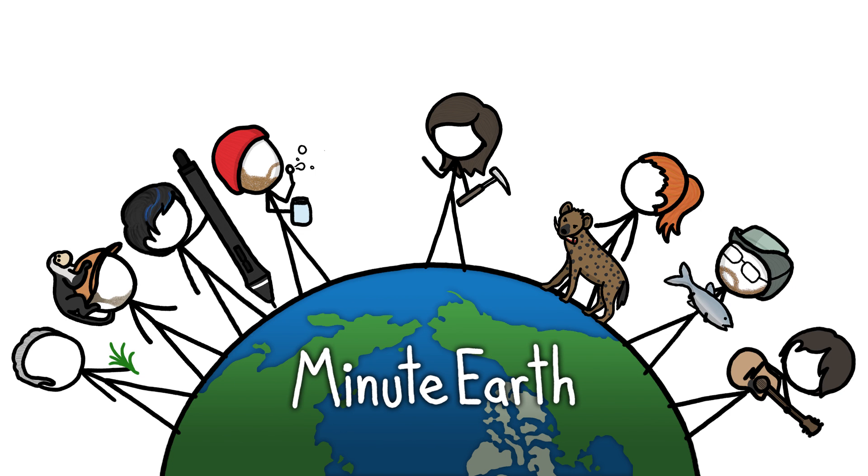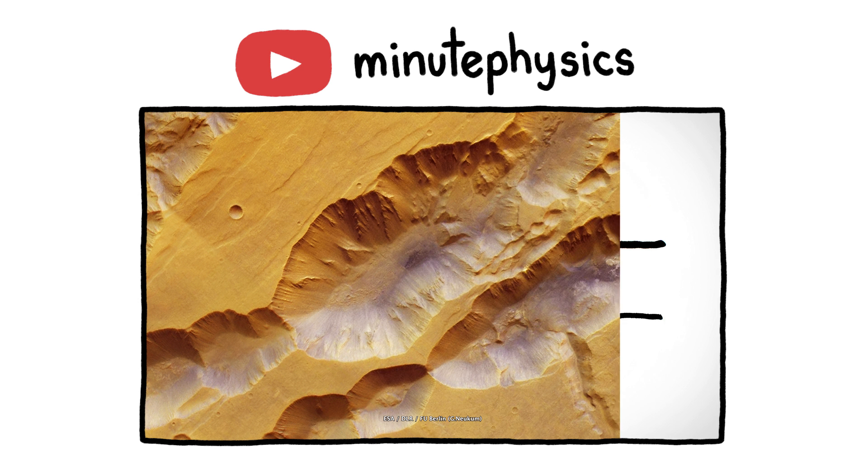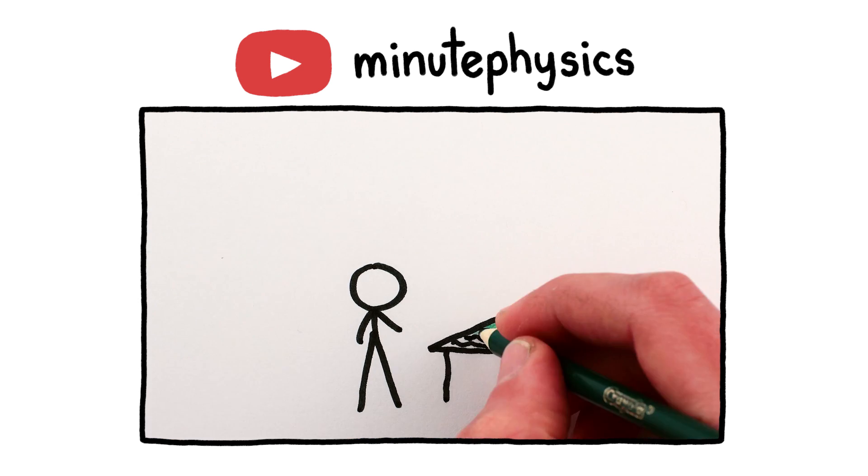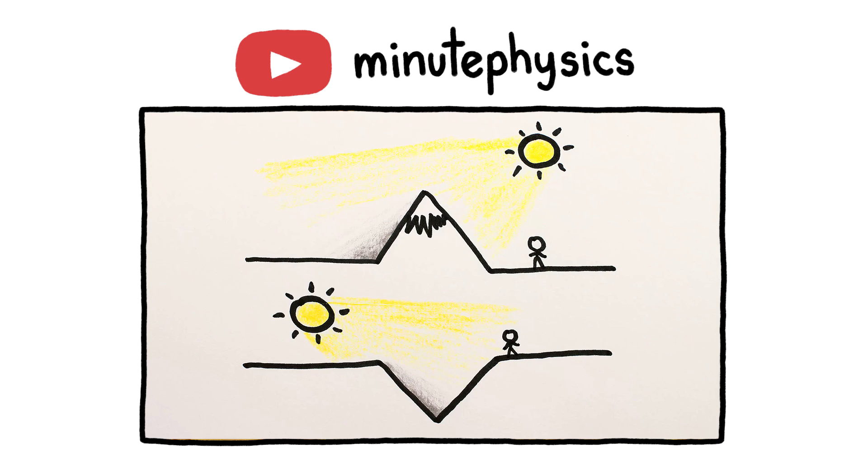Hi, this is Emily from MinuteEarth. A little while back, Henry made this great MinutePhysics video about how the weird symmetry of light and shadows on a landscape can make it really hard for your brain to tell which features are popping out and which ones are dented in, especially if you're not sure where the light is coming from.